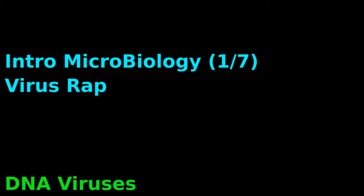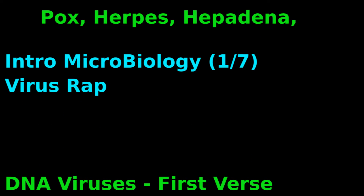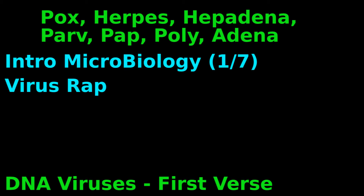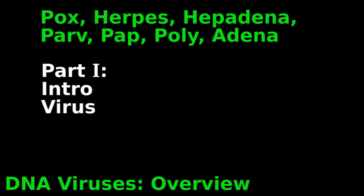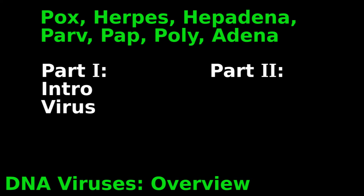HelpHippo's virus wrap names DNA viruses in the first verse: Pox, Herpes, Hepadna, Parvo, Papilloma, Polyoma, Adena. Now for the DNA virus overview. In part one, we will learn one thing about each virus, and in part two, we will discuss how the virus wrap can help you remember DNA virus structure.